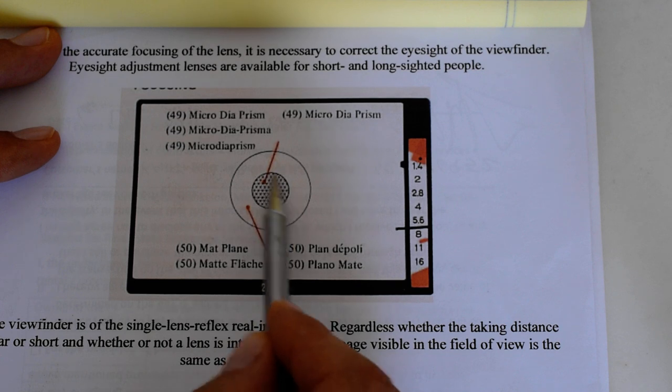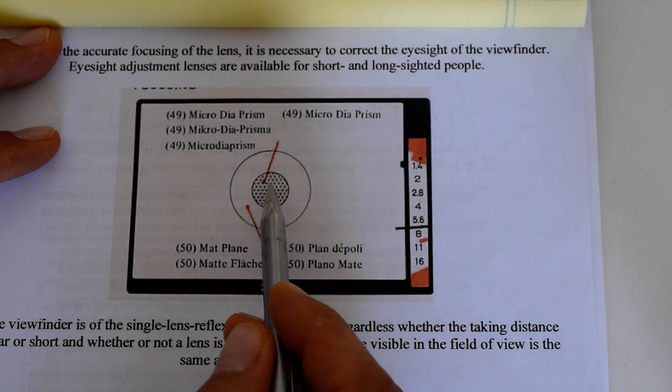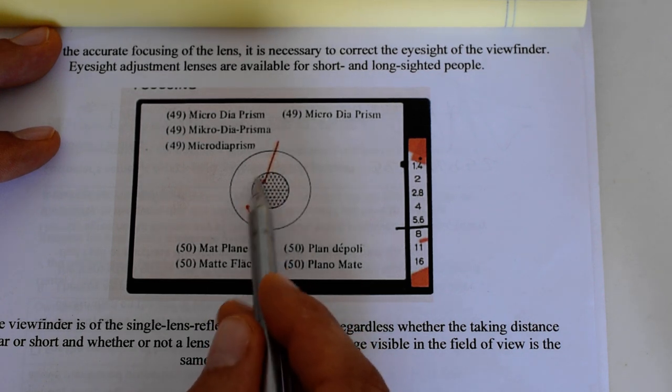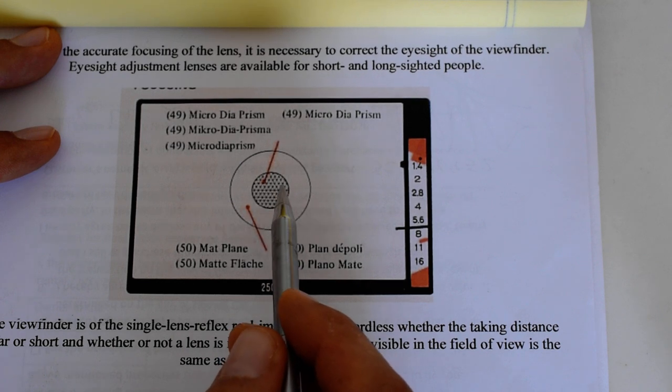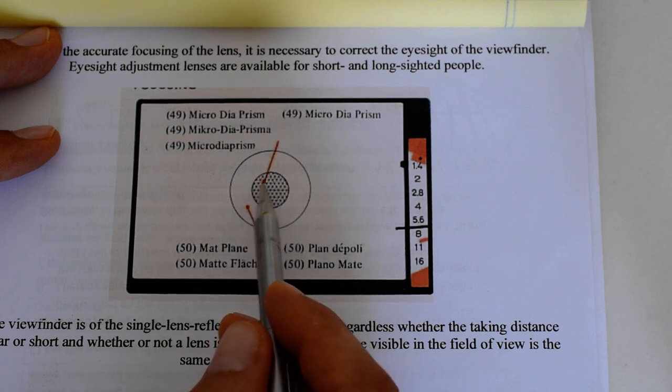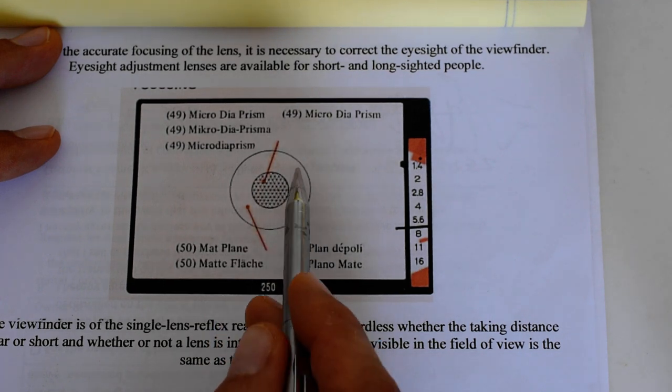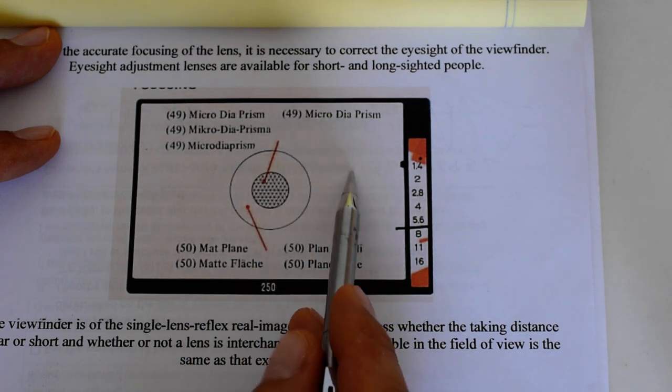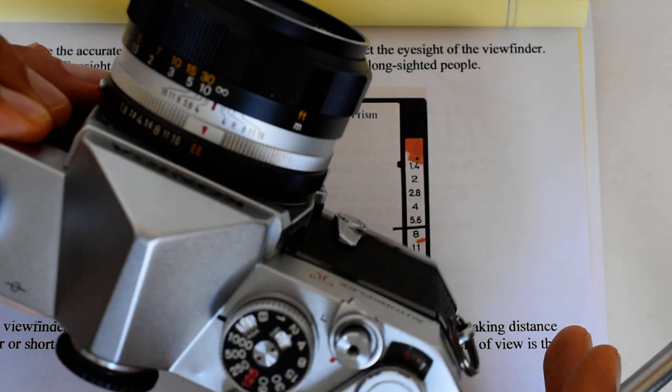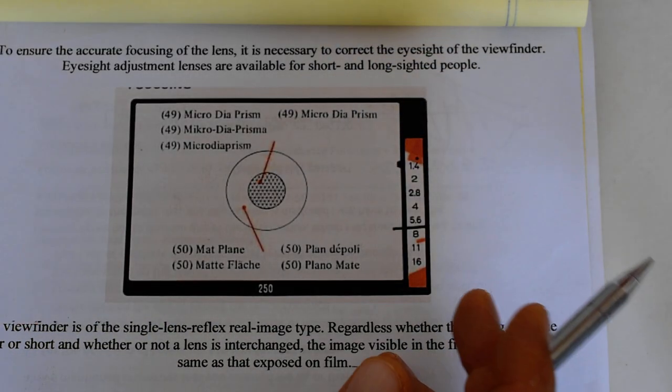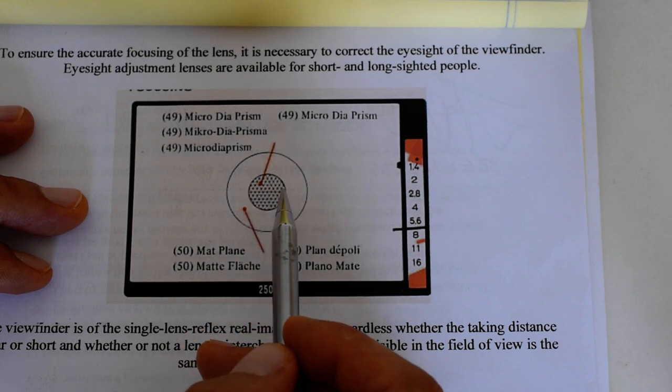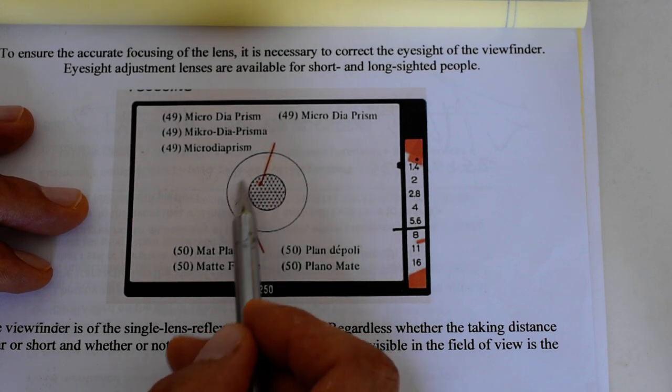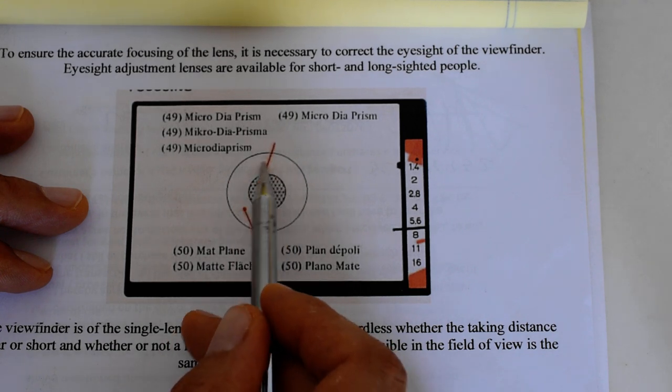You also have the micro prism spot in the center. Some cameras of the period had a split image rangefinder focusing aid in the center. The T2 simply had the micro prism spot. I believe you could substitute a split image rangefinder focusing aid for the micro prism, but my understanding is that was a fairly rare option and the vast majority of T2s came with simply the micro prism spot. You also have the circle and the ground glass focusing field. For example, when I was shooting this camera with the 200 millimeter f/3.5 at maximum aperture, it's a little difficult to use the micro prism. It kind of blacks out a little bit in certain lighting conditions, so I was often using this area here for focusing.